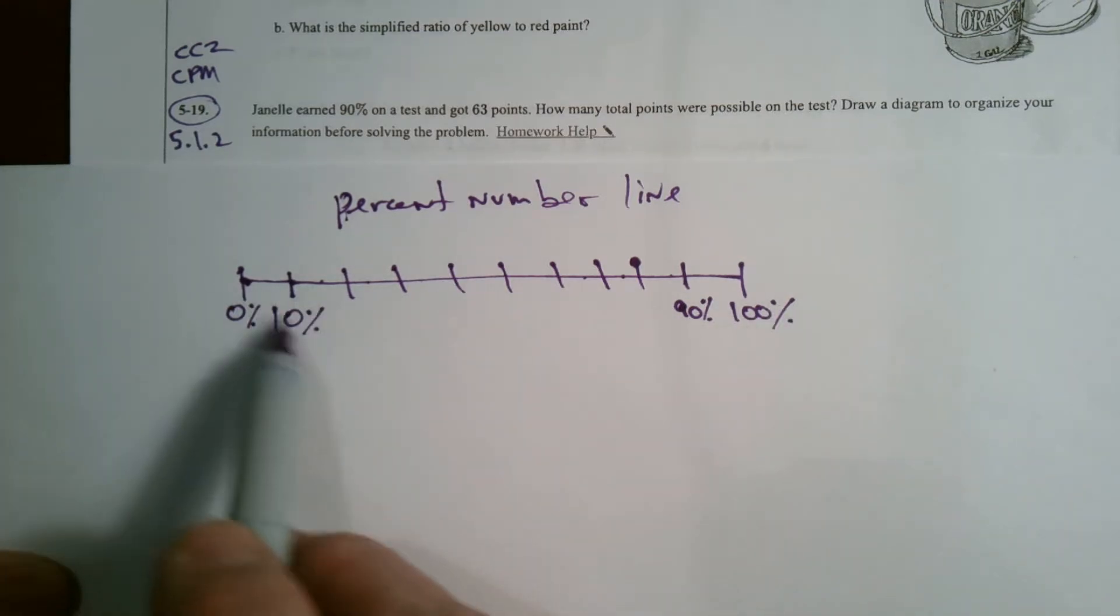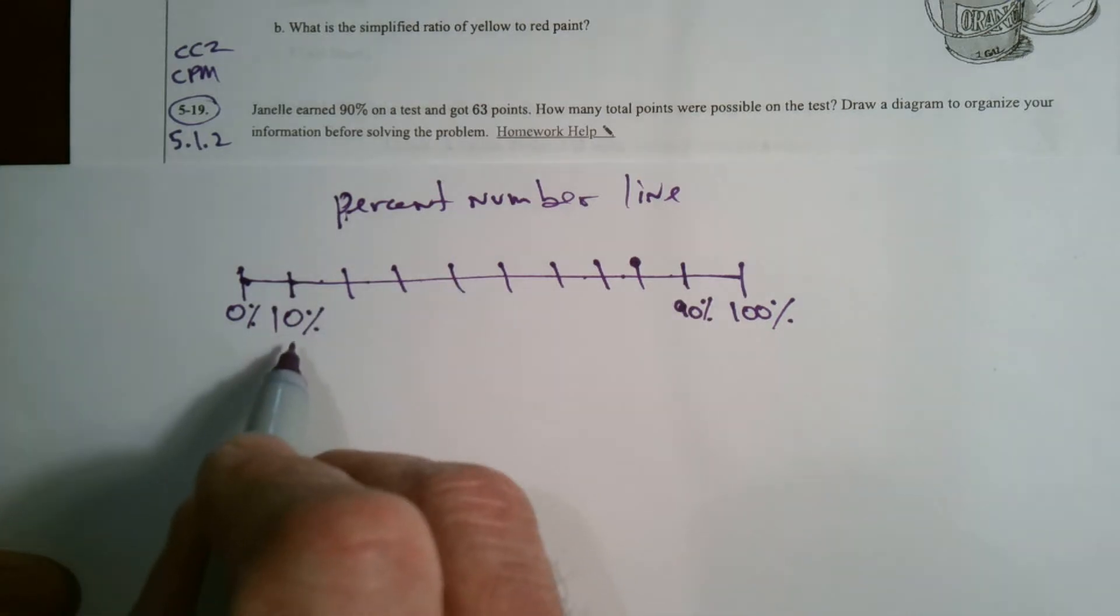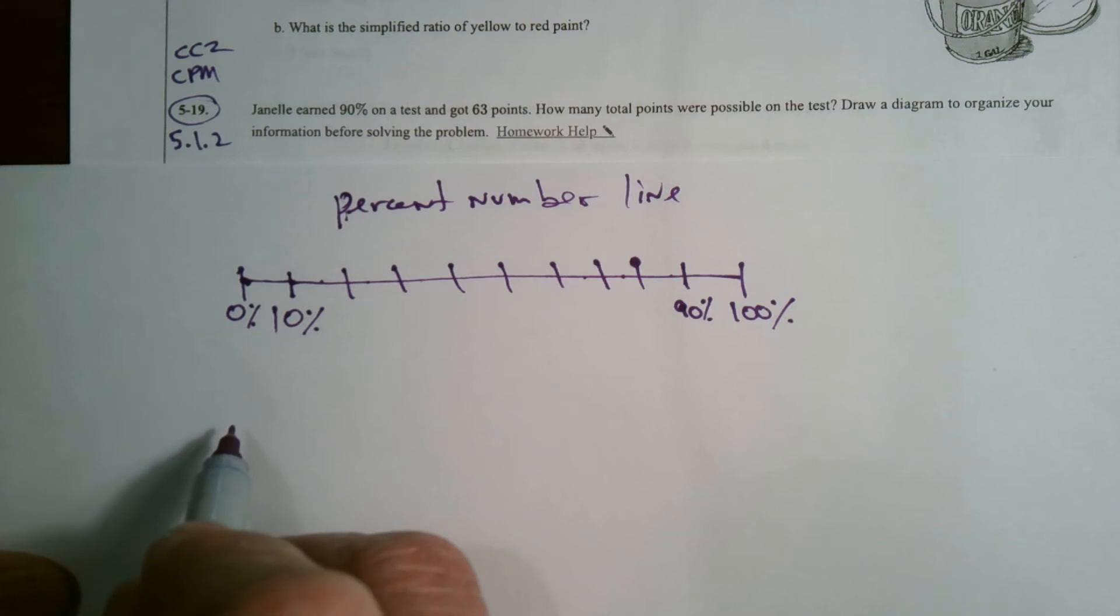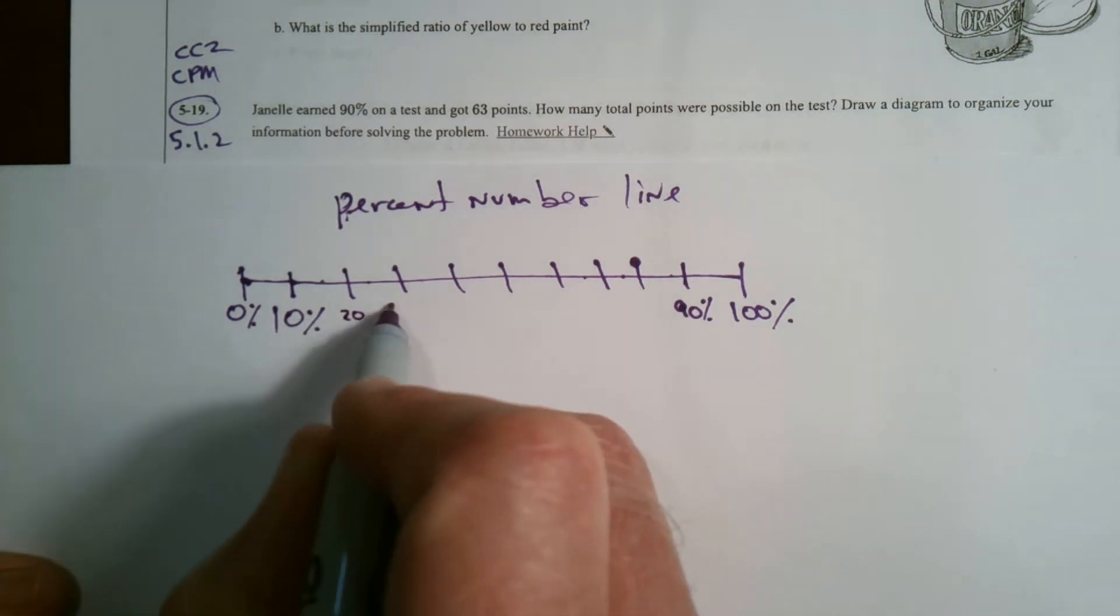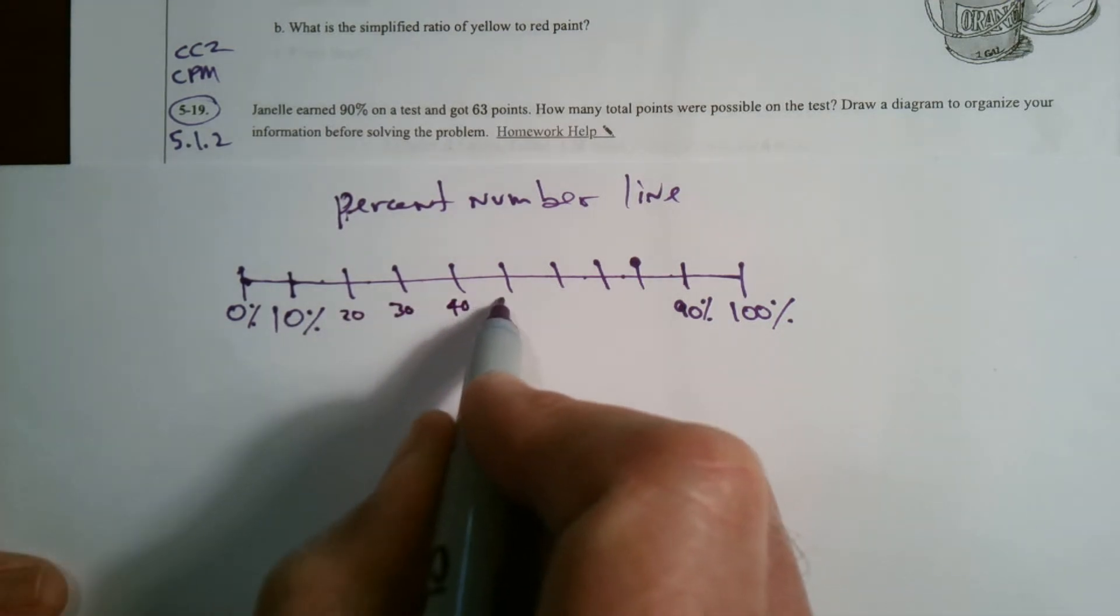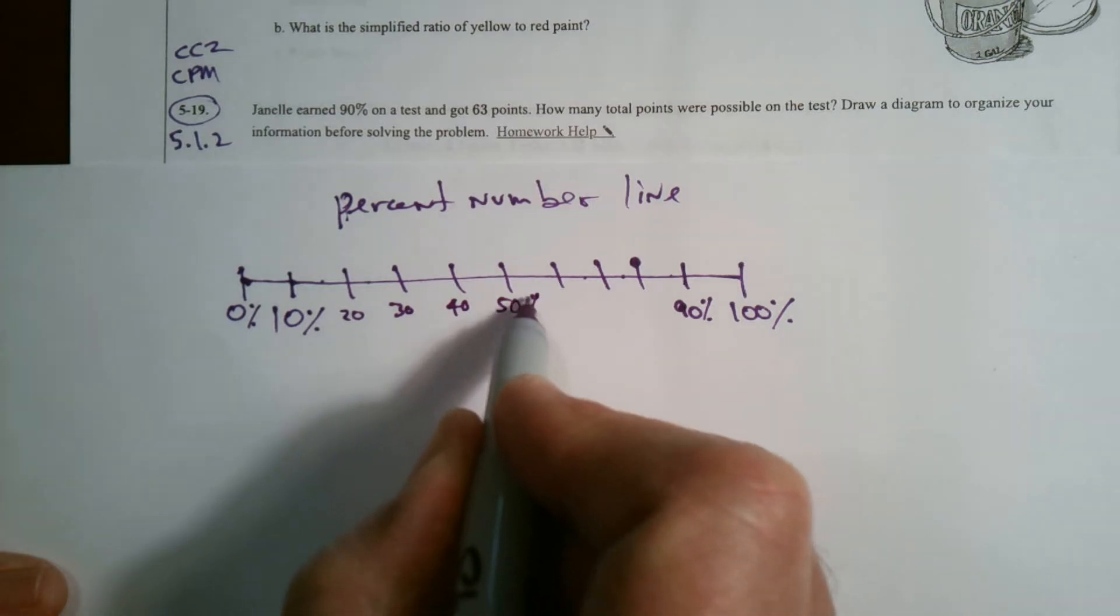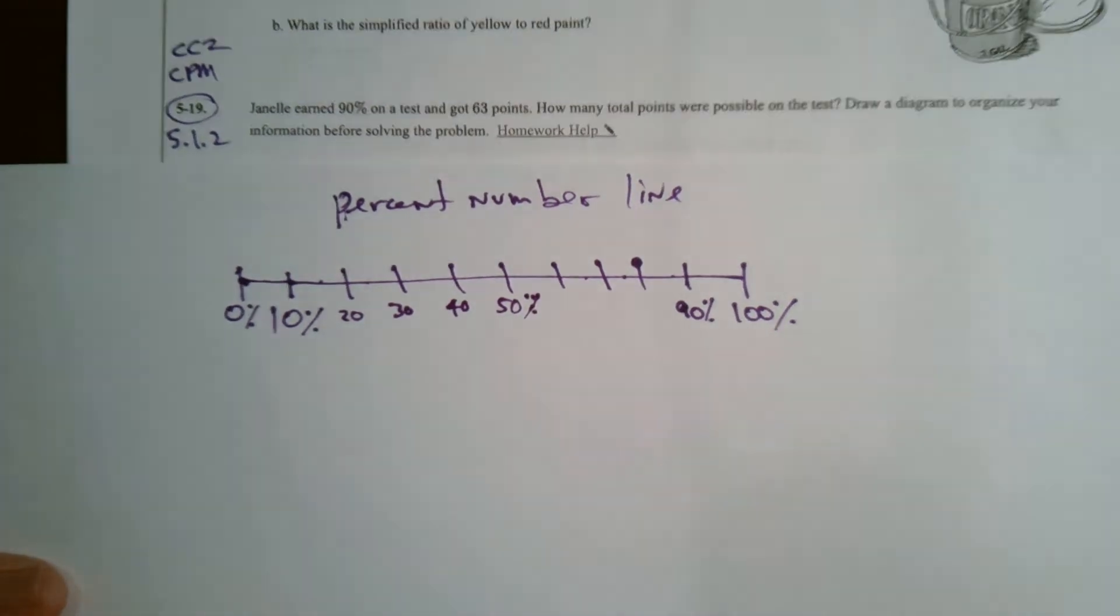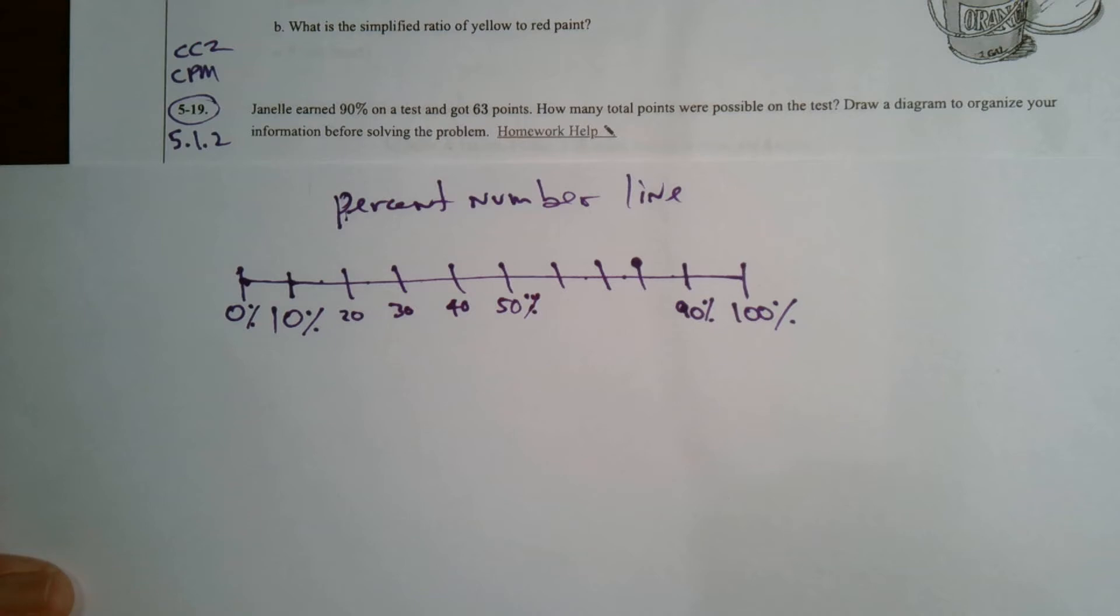And right away, I've kind of given it away, but 10 spots tells me every one of these 10 spaces represents 10%, right? 10%, then that's 20, 30, 40, 50%, and so on and so forth, right? I'm all the way up to 100%.